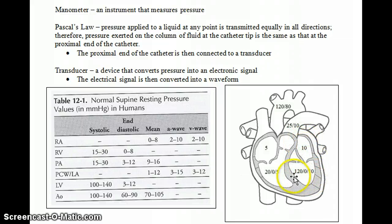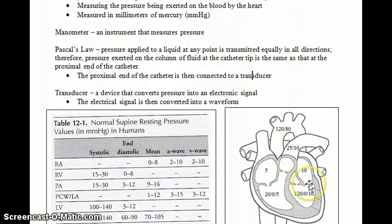The left ventricle, systole is 120, diastole is 0, and the EDP, the end diastolic pressure is 10. And then the normal pressure of the aorta, or any artery for that matter, is 120 over 80. So 120 being systole, 80 being the diastole.